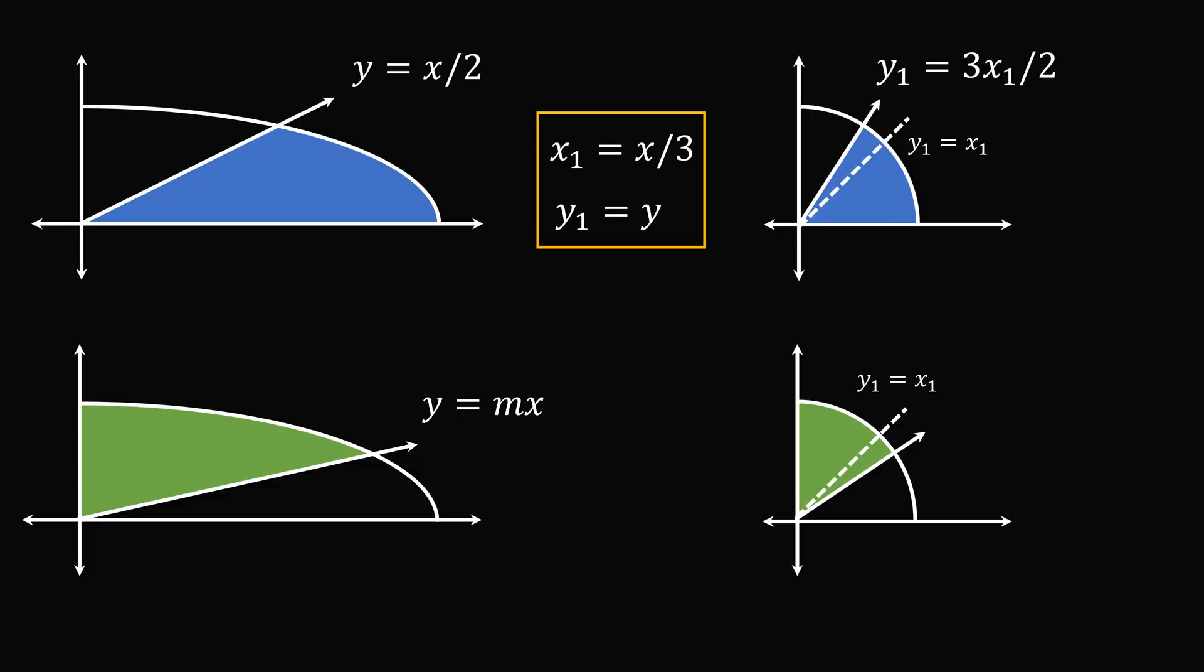So let's take this line y1 equals 3x1 divided by 2, and let's reflect it about the line y1 equals x1. To do that, we change the y1 and x1 coordinates, and then we can solve for y to get y1 equals 2x1 divided by 3. So we've solved for this line in the green region.